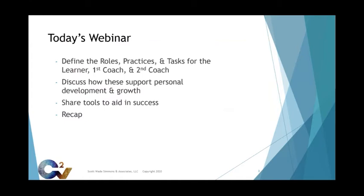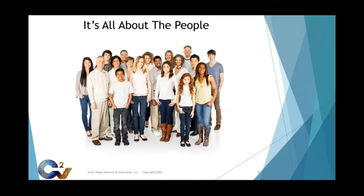We'll start by defining the roles, practices, and tasks for our three players: the learner, first coach, and second coach. I'll spend time throughout discussing how the roles, practices, and tasks support personal development and growth, show some tools I find helpful, and end with a quick recap of the information. With all business improvement work, including the improvement kata and the coaching kata, please remember it's all about the people. I firmly believe the primary purpose of business improvement as a whole is to develop people. The improvement kata and the coaching kata provides the ideal place to teach, practice, and grow skills that develop people to be capable of handling huge challenges and achieving extraordinary results.